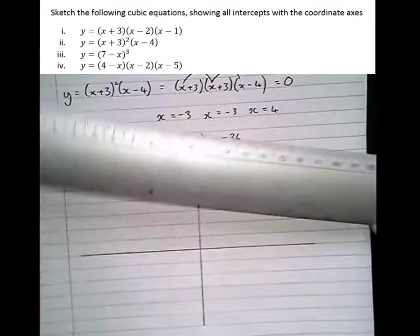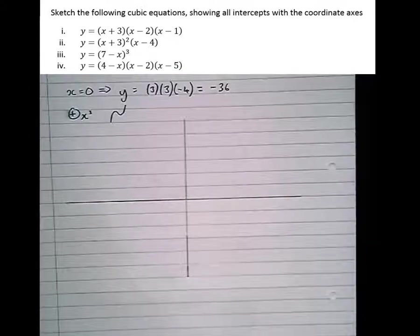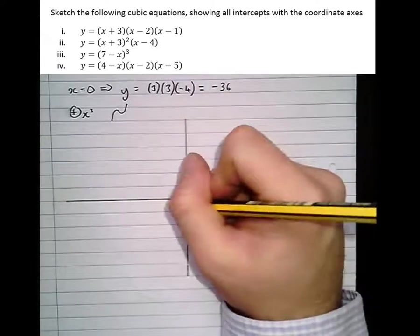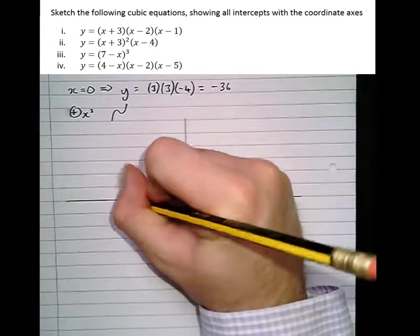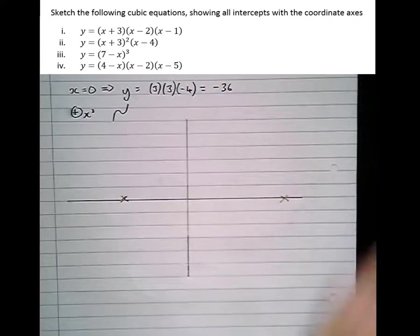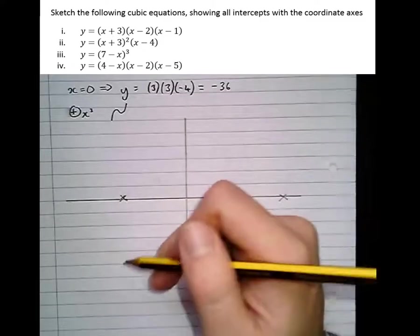So let's draw the axes. Nice and big ruler and pencil. So the intercepts are at minus 3, another one at minus 3, and one at 4.